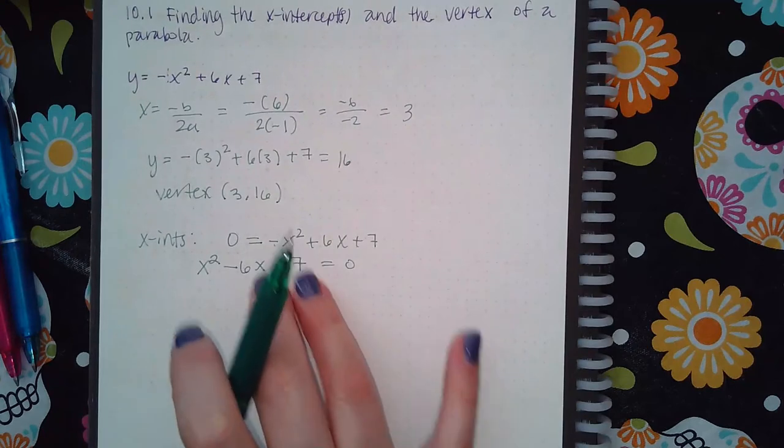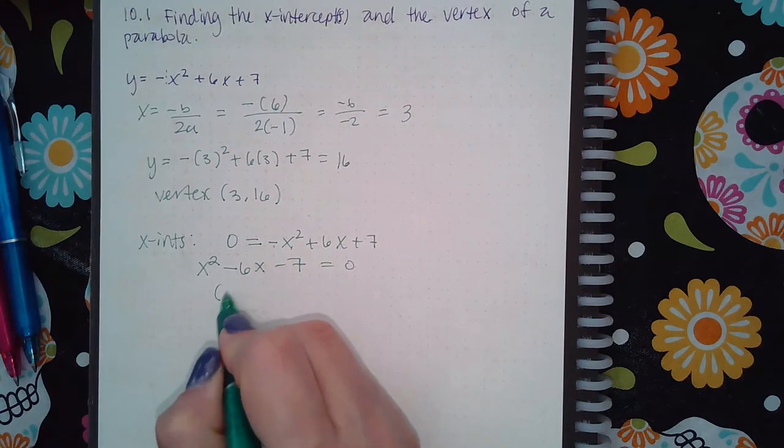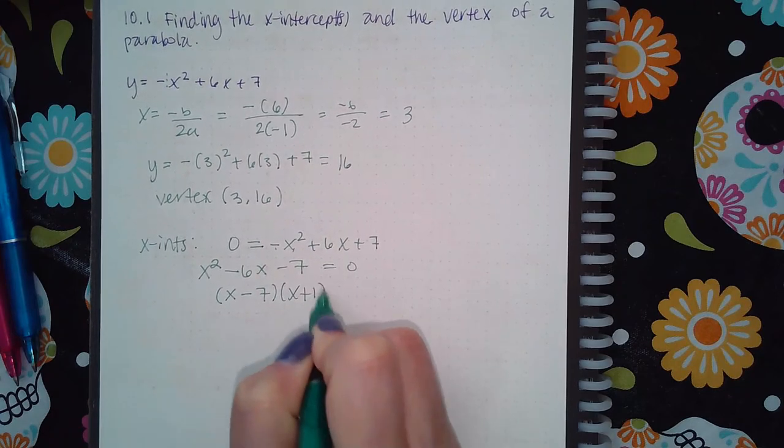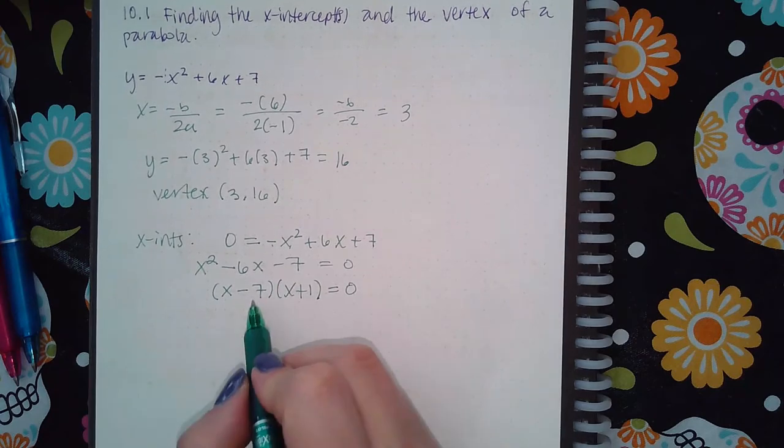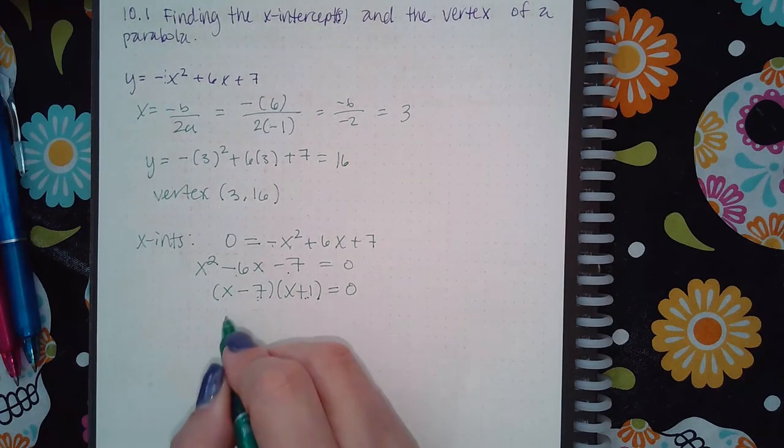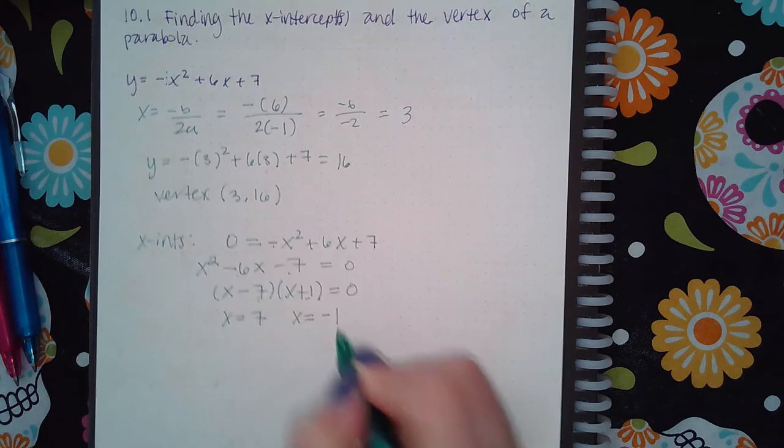And then you can do the quadratic formula to figure out what the x-intercepts are. But this one is actually pretty easily factorable, so I think that method is faster in this particular case. So these do multiply to give me negative 7 and they combine to give me negative 6. So I get x equals to positive 7 and x equals to negative 1.